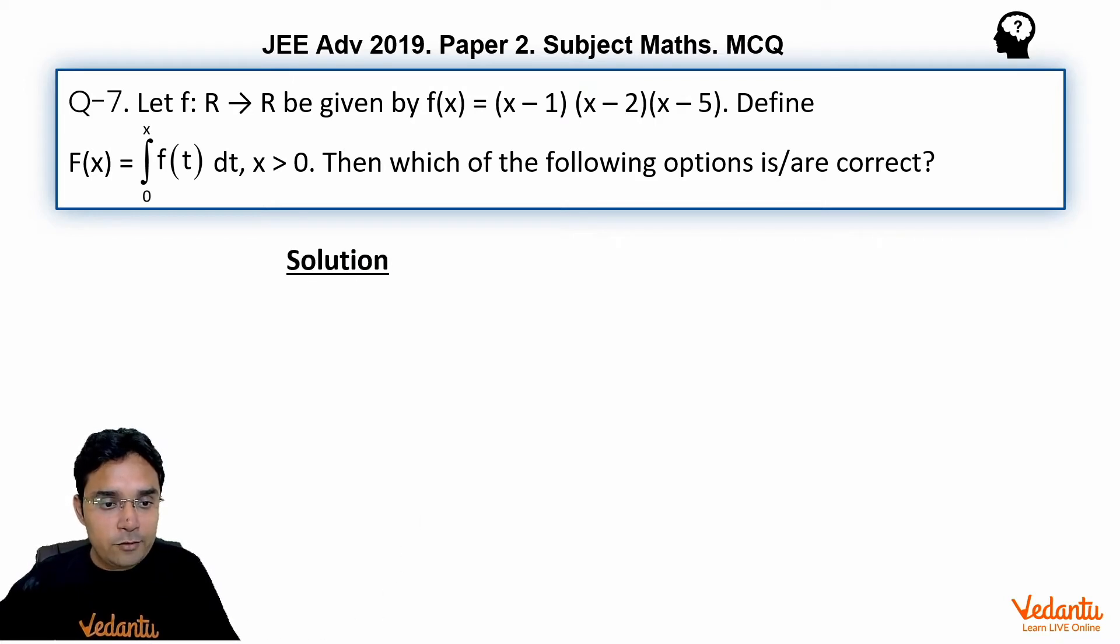First of all, as we all know, to find maxima and minima we need differentiation of a function if it is differentiable. Because f(x) is like this, capital F(x) has to be differentiable. So F'(x) will be nothing but small f(x) by use of Newton-Leibniz formula.